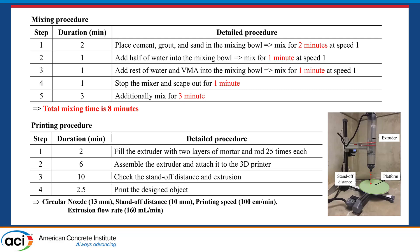To prepare the mortar, we first did dry mixing for two minutes, then added water and VMA, stopped the mixer for one minute, and then additionally mixed for three minutes. Since we don't have a pumping system in our 3D printer, we manually added the mortar into the extruder, then assembled the extruder and attached it to the 3D printer. We then checked the standoff distance and extrusion before printing the designed object.